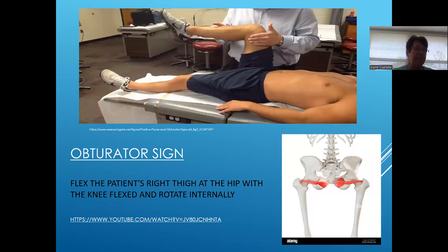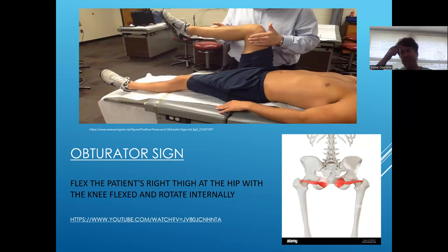The next one is the obturator sign. This technique is performed with the student in the supine position with the right leg flexed at the hip and at the knee. You have one hand on the ankle and the other hand at the knee. Rotate the thigh internally by moving the ankle away from the body. This causes the internal obturator muscle to stretch, producing indirect pressure over the area where the appendix is located. Increased pain in the right lower quadrant suggests an inflamed appendix or possibly an abscess.